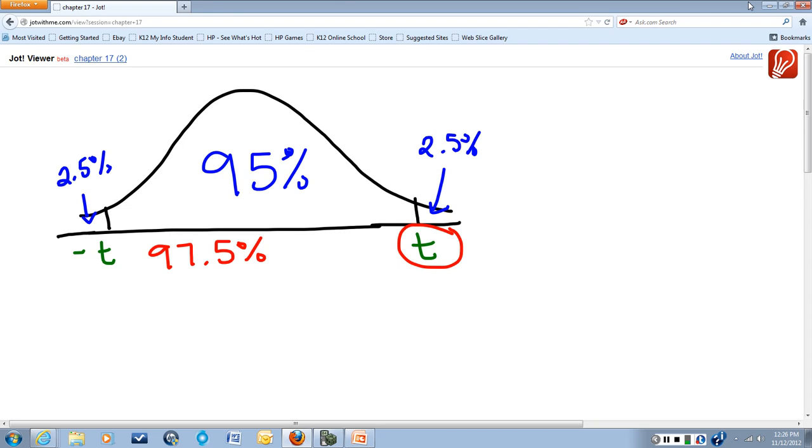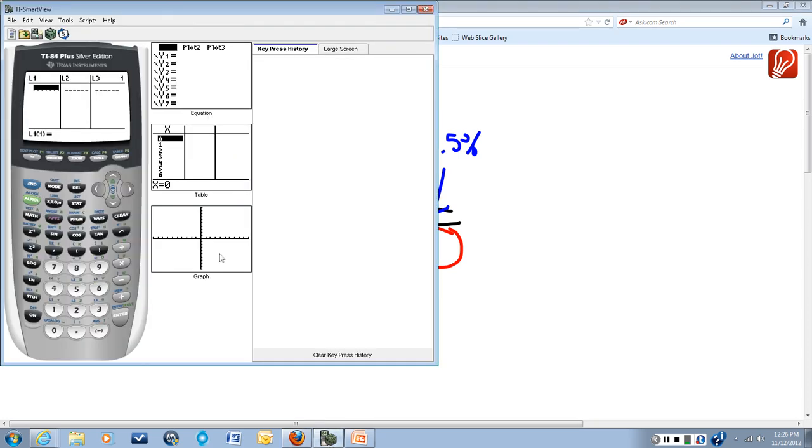For this, we use the inverse t function on the calculator. We go to the calculator and do a second, and then this bars key to get this distra up there. It's the inverse t function, which is number 4. You can just hit 4 and it'll come up, except I was not in the right place. So let's quit the lists and do that again.